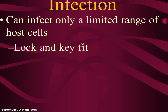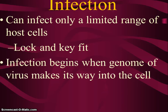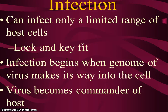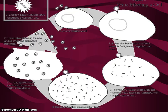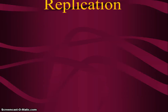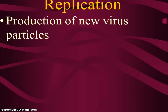Viruses can only infect a limited range of host cells — it is a very lock-and-key fit between the proteins on the outside of the virus and specific receptor molecules on the surface of the cell. Infection begins when the genome of the virus makes its way into the cell. The entry mechanism varies by species, but once inside, the virus reprograms the host cell to copy viral genes and manufacture capsid proteins.